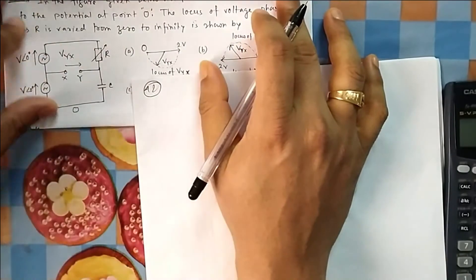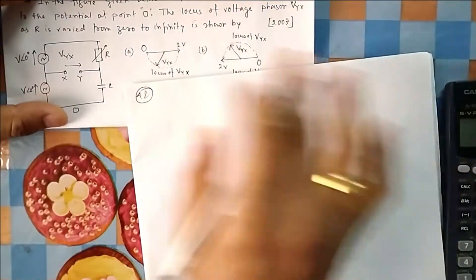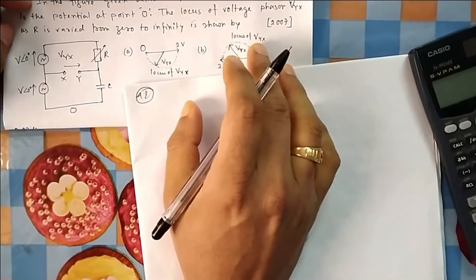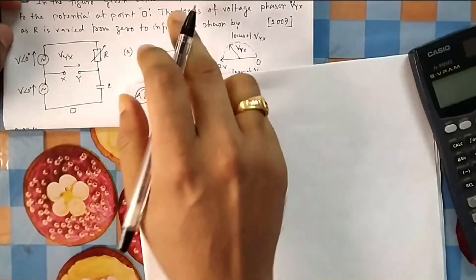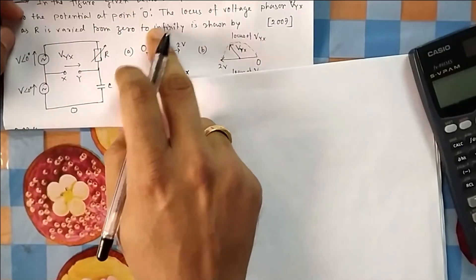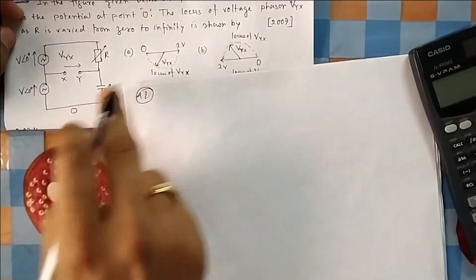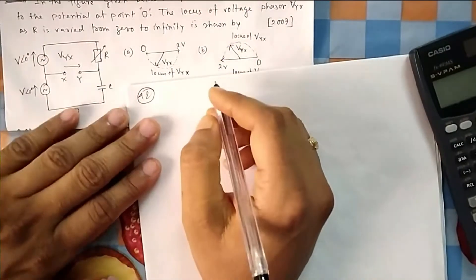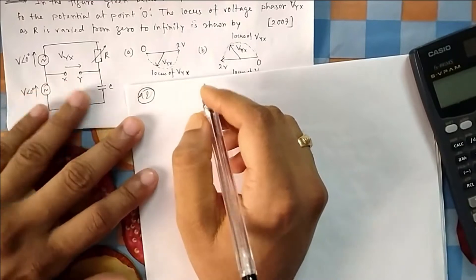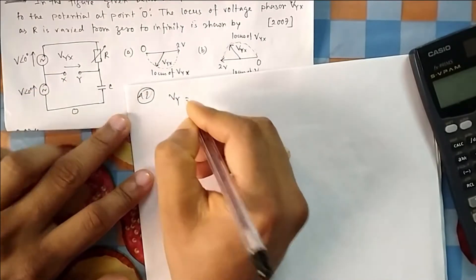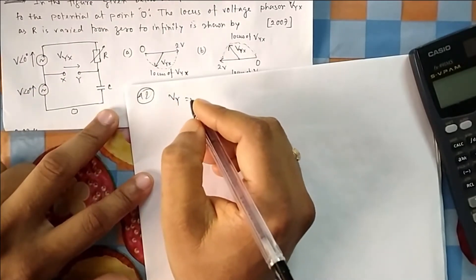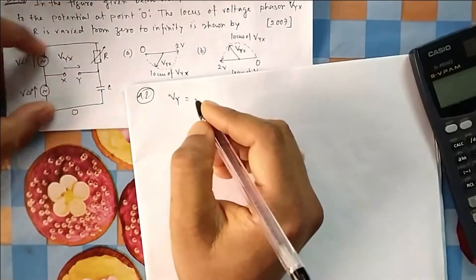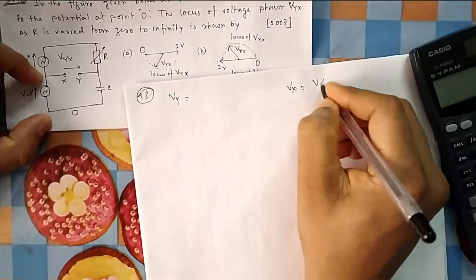Question 42 is about a phasor diagram. I have already shown how to draw a phasor diagram — write the expression, put some values of R, and see how it moves. Exact calculation is not required; just play with the options. All phasors are given with reference to the ground point. Let me calculate Vy and Vx: Vx is simply V∠0°.